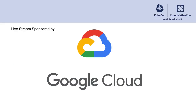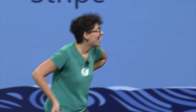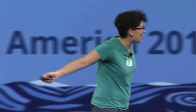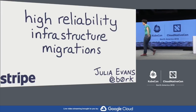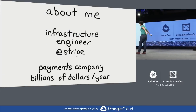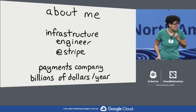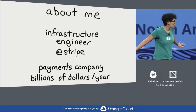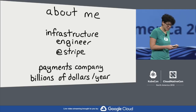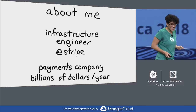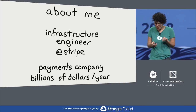Hello, KubeCon. I'm very excited to be here with all of you. This talk is called High Reliability Infrastructure Migrations. I'm an infrastructure engineer at Stripe. All you need to know about Stripe for this talk is we're a payments company. We process billions of dollars a year for our users.